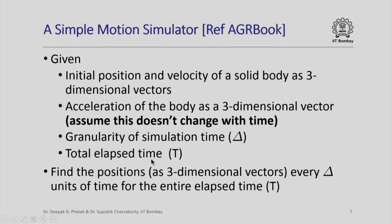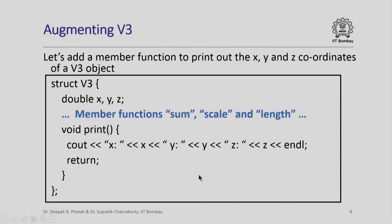We are given the granularity of simulation time, call it delta, and the total amount of time that needs to elapse, call it capital T. What we are required to compute are the positions as three-dimensional vectors every delta units of time for the entire elapsed time of capital T. To do this, we will first augment the V3 structure by adding a member function which prints out the x, y, and z coordinates of a V3 object.